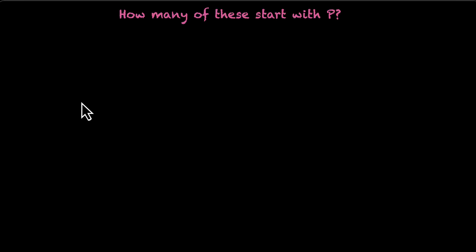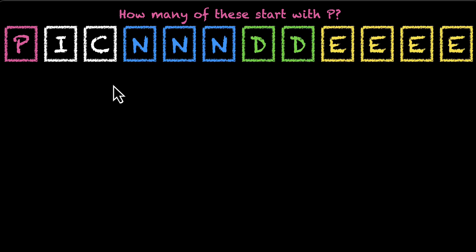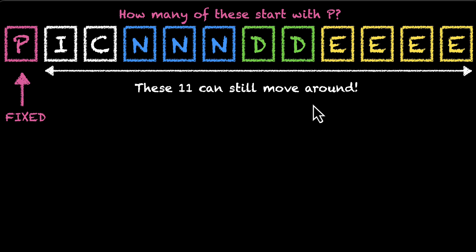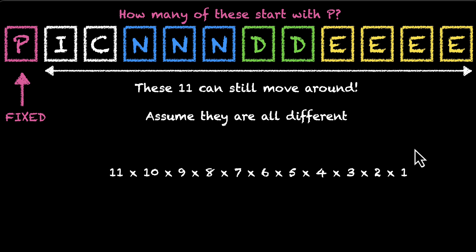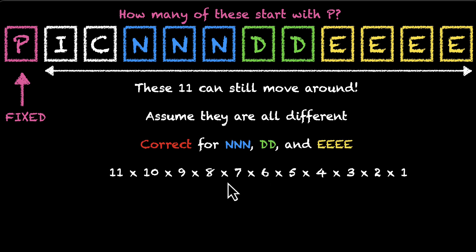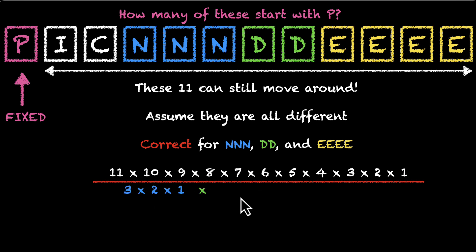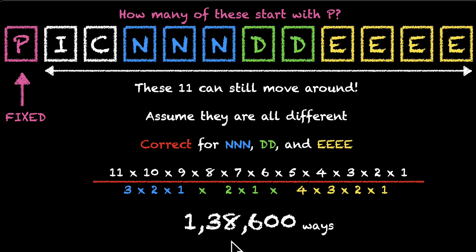Let's pick the next one: in how many of these roughly 16 lakh arrangements do the words start with the letter P? If the word has to start with P, then P is fixed in the first position. The remaining 11 letters can still move around. Assuming they are all different, we have 11! ways. But we also correct for three N's, two D's, and four E's — dividing by 3!, 2!, and 4!. That gives us 1.38 lakh ways.